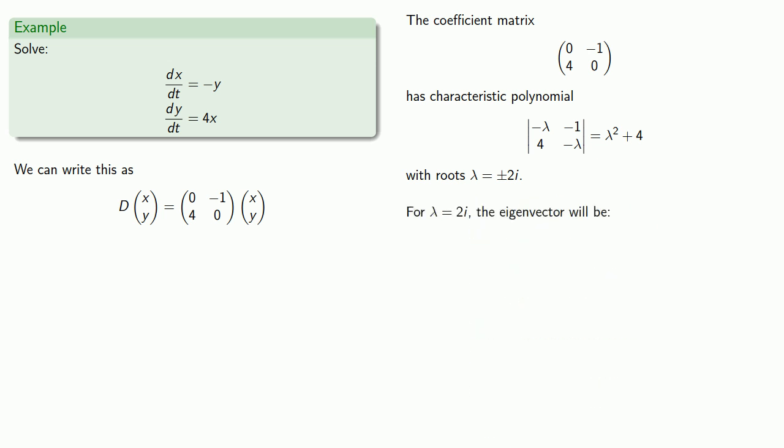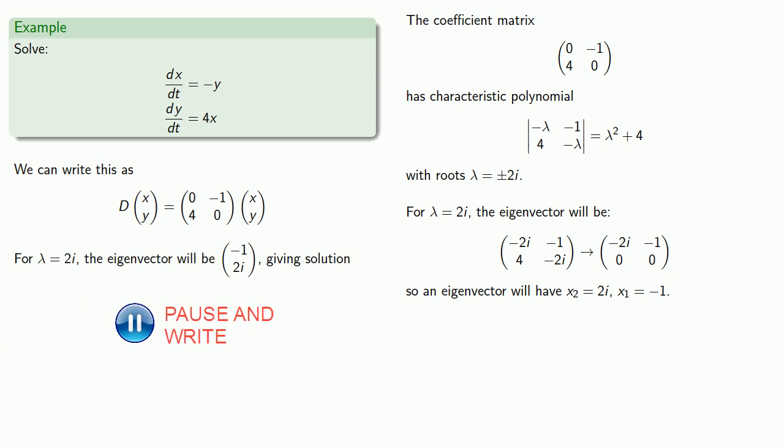For lambda equals 2i, the eigenvector will be... And so an eigenvector will have x2 equals 2i, and x1 equals minus 1. And this gives us the solution e to power 2i t times the vector minus 1, 2i.